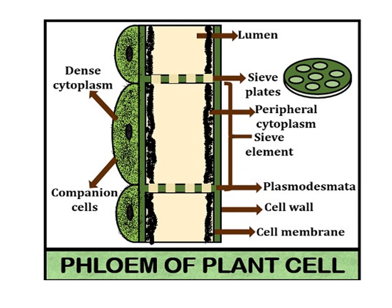Here in this slide you can see the structure of the phloem cell. At the top you can see the lumen, that is the empty space of the sieve tube, and there is no cell nucleus present in the cell lumen.